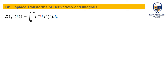For the Laplace transform of derivatives, we use the definition. The Laplace transform of the first derivative of f of t is equal to the improper integral from zero to infinity of e to the minus s t times the first derivative of f of t. We will now derive this Laplace transform.